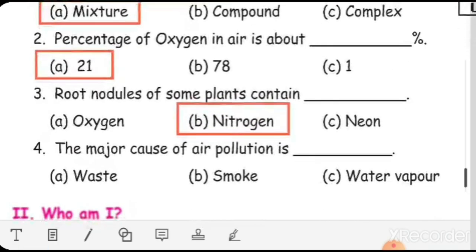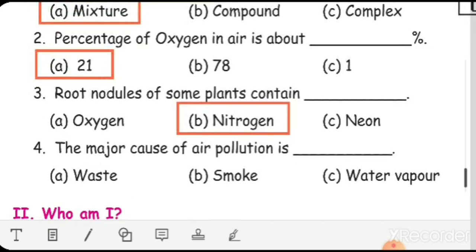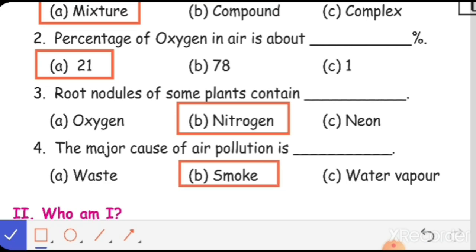Fourth question, the major cause of air pollution is smoke. The major cause of air pollution is smoke.